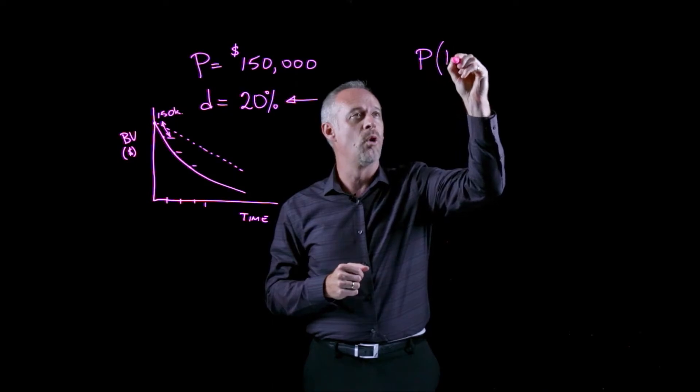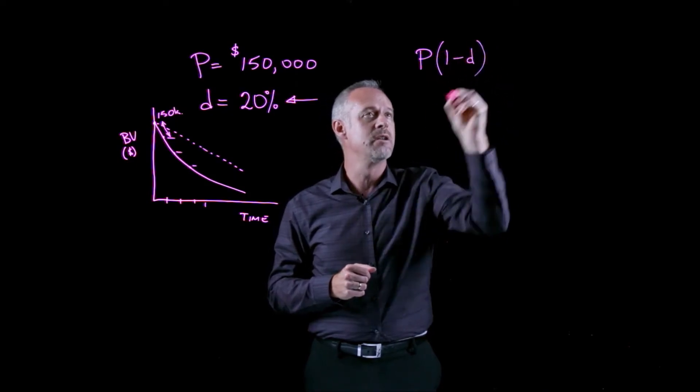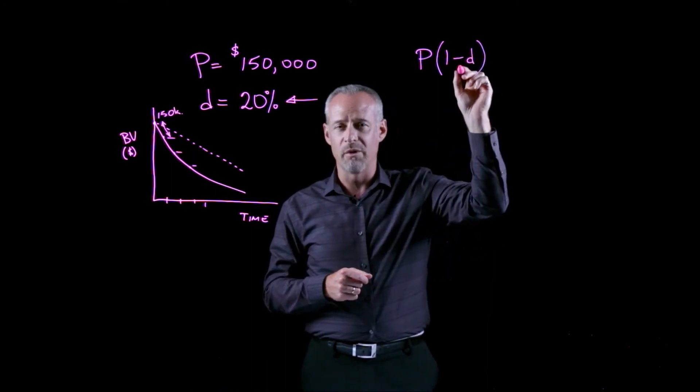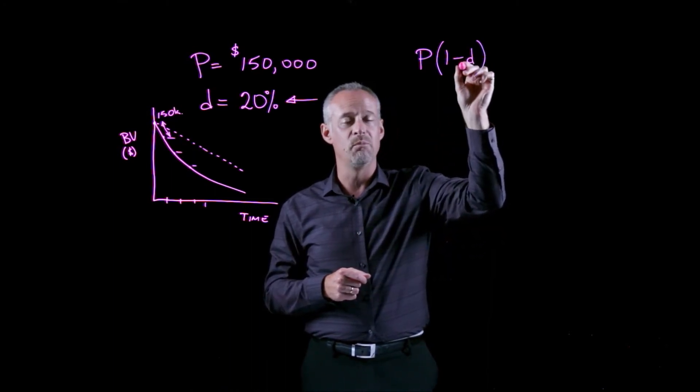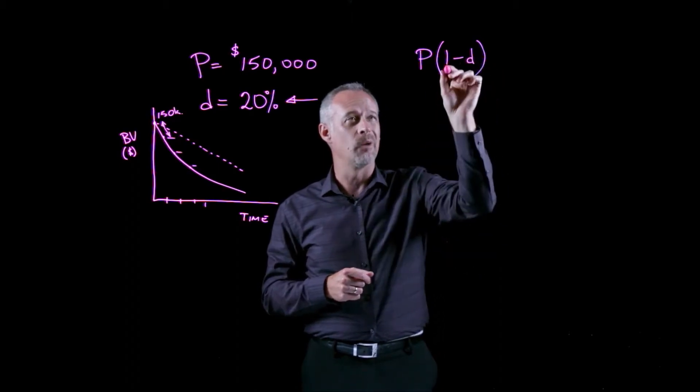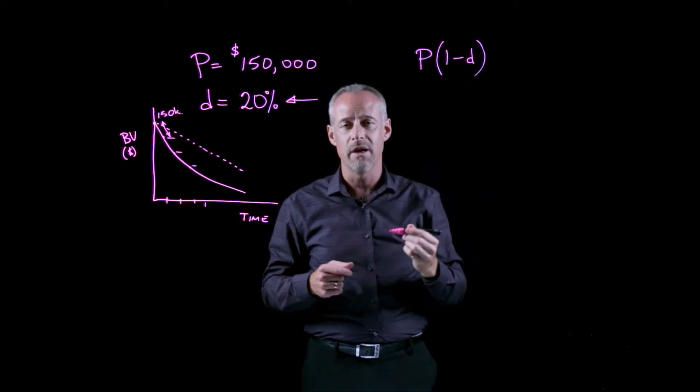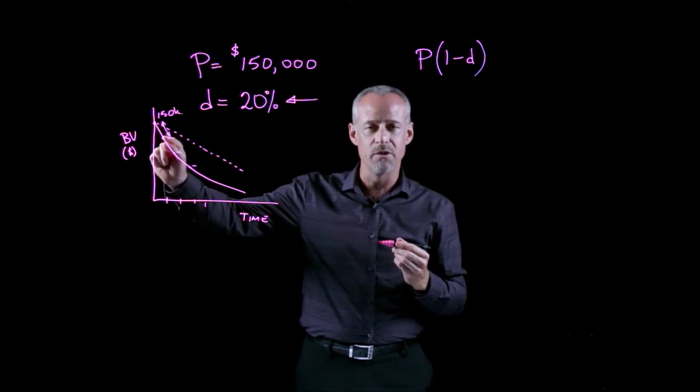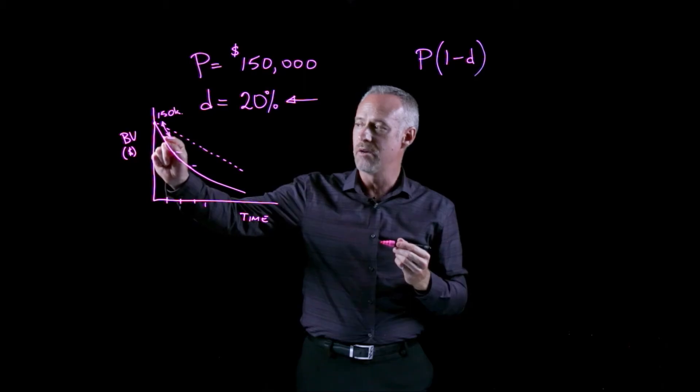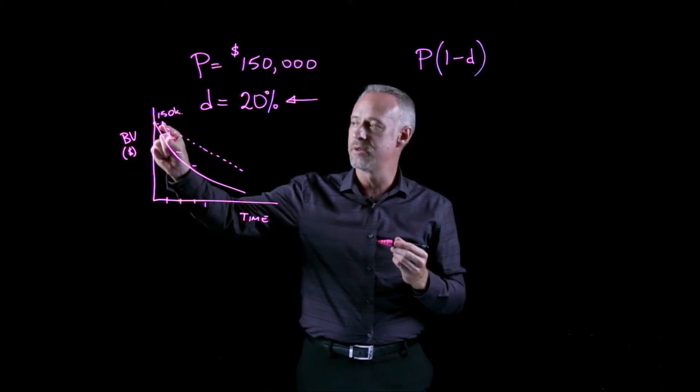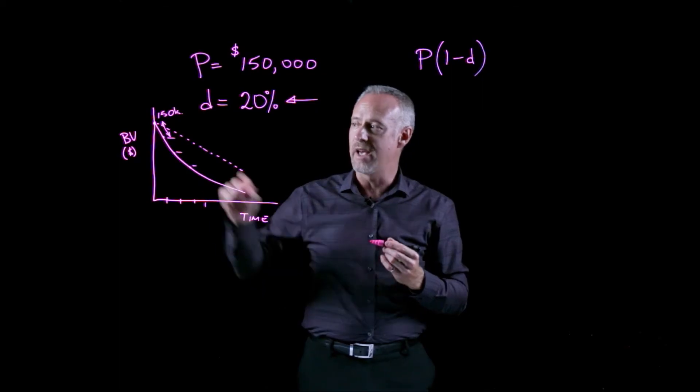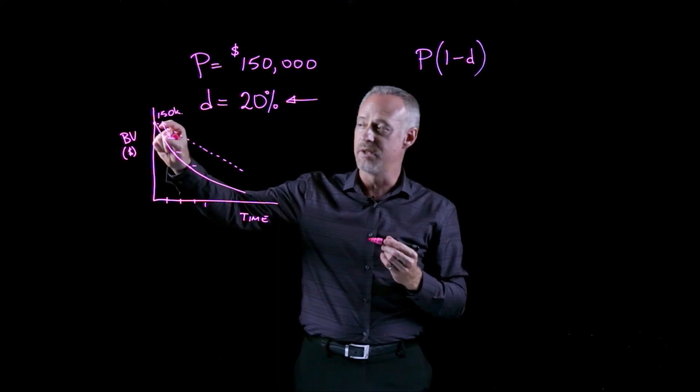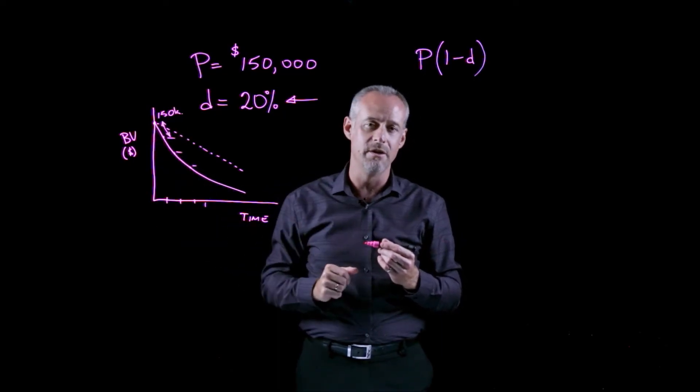and I simply multiply by 1 minus d, where d is the depreciation rate. So if you think for a moment with the numbers, if I plug in 0.2 here, or my 20%, I'm really multiplying P by 80%, or 0.8. So what it means is at the end of the first time period, the value of the asset is 80% of what it was at the beginning. And the amount that the asset declined in value is the depreciation expense for that year.